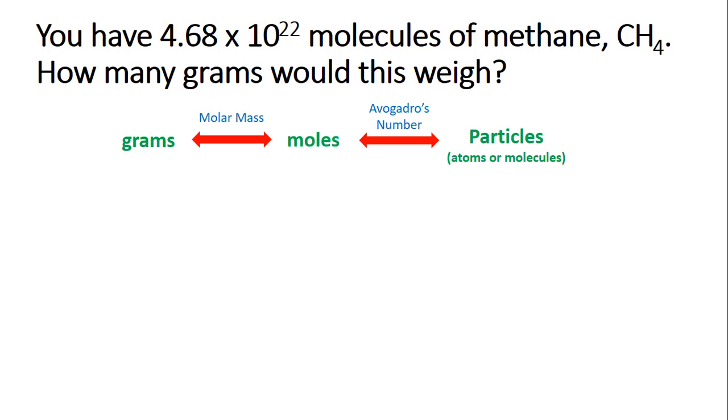The given in this problem is the numerical value 4.68 times 10 to the 22nd molecules of methane. If we are trying to go from molecules to moles, we will use the conversion factor, Avogadro's number. Think about how you're going to arrange this conversion factor. If you start with molecules on the top, we're going to want molecules on the bottom so we can cancel out those units. That leaves us with mole as our remaining unit up in the numerator.